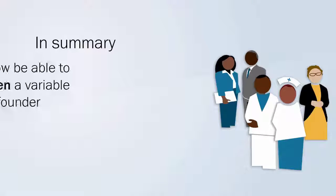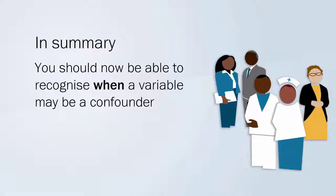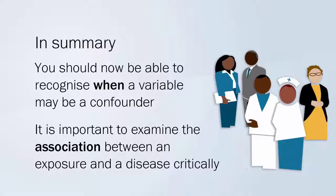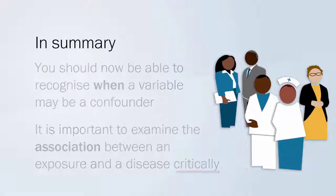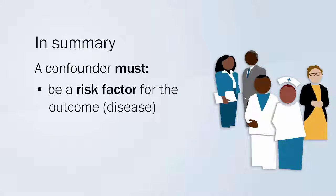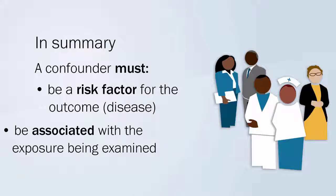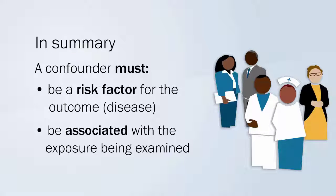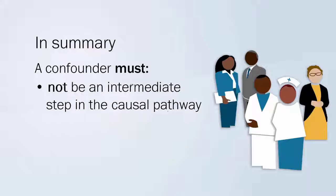In summary, you should now be able to recognise when a variable may be a confounder. It is important to examine the association between an exposure and a disease critically. A confounder must be a risk factor for the outcome, disease, associated with the exposure being examined, not be an intermediate step in the causal pathway.